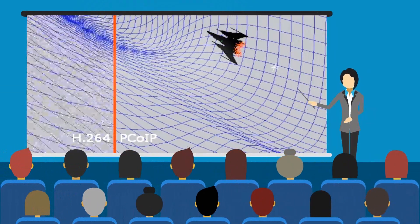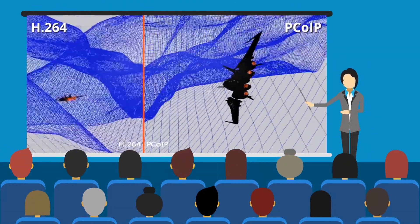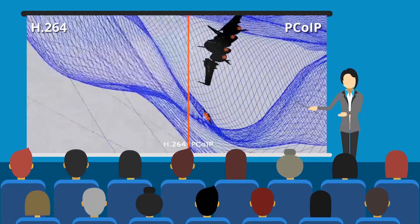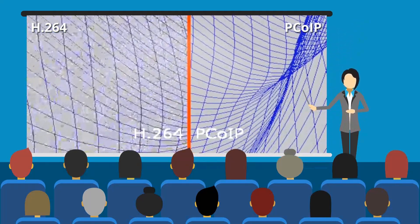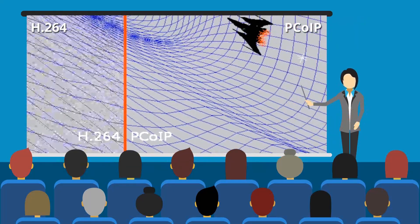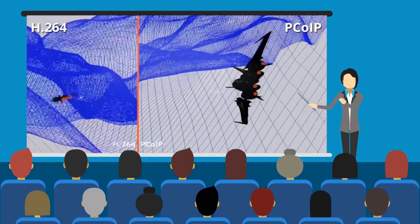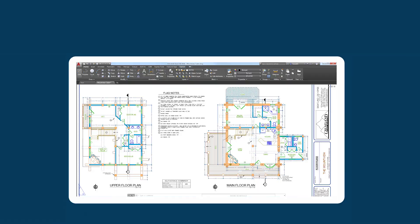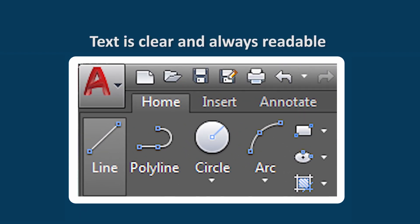When working with dynamic graphics, the PCoIP protocol reproduces them with no loss of quality. On the left, notice the lack of clarity around the grid lines, whereas on the right, with PCoIP, the image is crisp. Here's one last example of PCoIP in action — text is clear and always readable.